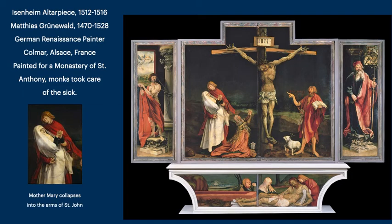Of course the next key event is the crucifixion. I decided to look at the Isenheim Altarpiece by Matthias Grünewald, a German Renaissance painter. It was painted for the monastery of St. Anthony, where the monks took care of the sick. Here you see the Virgin Mary collapsing into the arms of St. John.